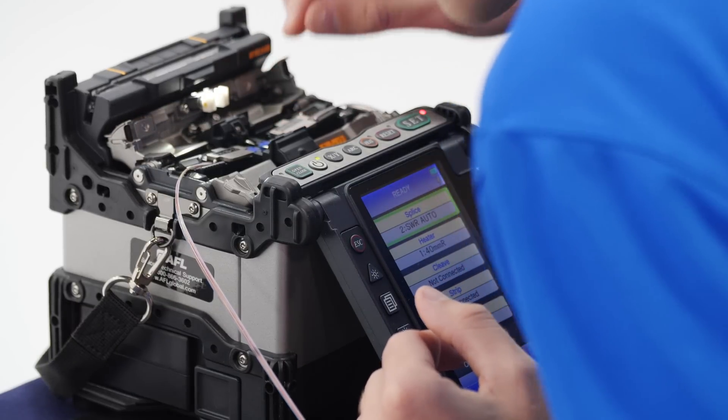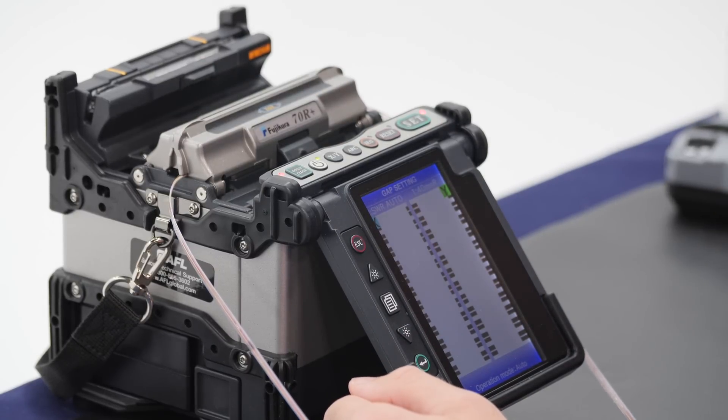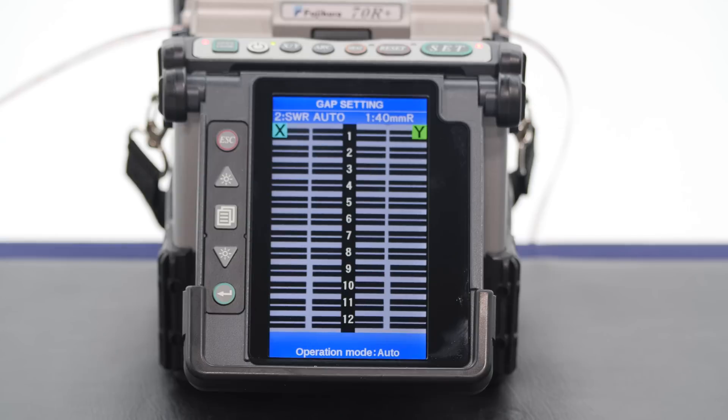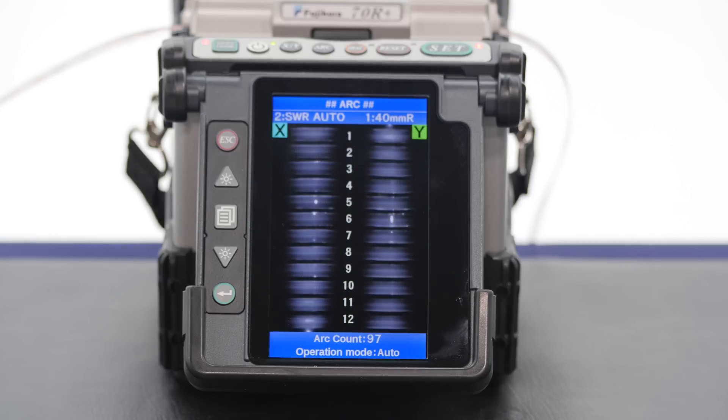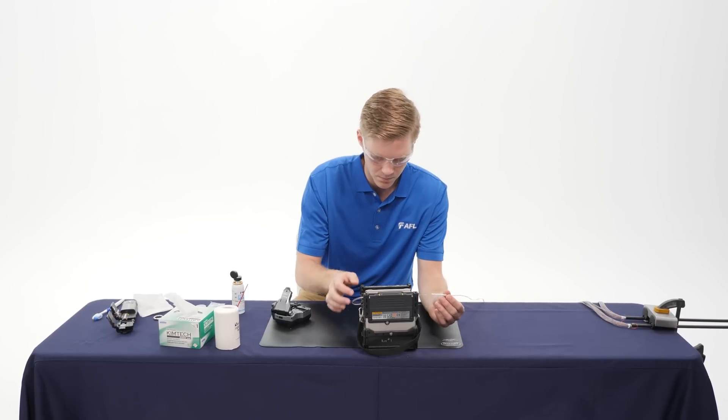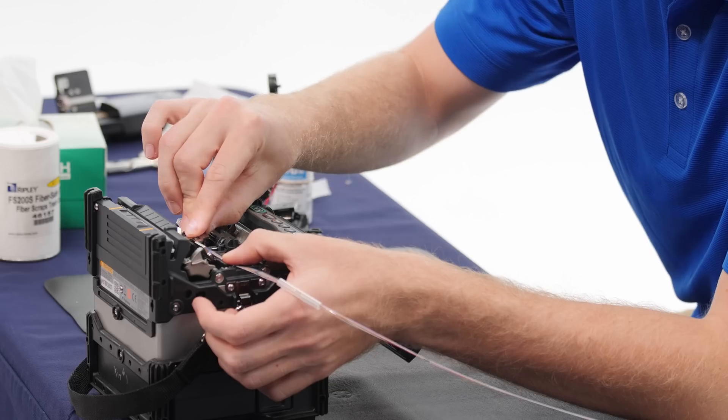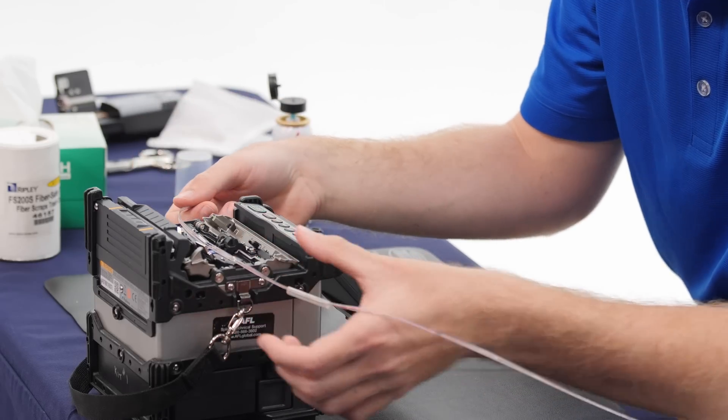He's got both fibers loaded into the splicer. He closed the wind protector. He's got the splicer activated. And his burn is complete. Rob has completed his 12 fiber splice. A single burn with the 70R. And he's burned 12 fibers at once.